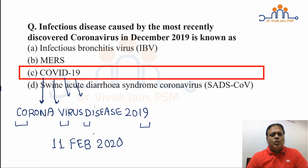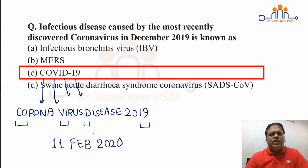This name COVID-19 was given by the World Health Organization on 11th of February 2020. Much before that, on 7th January 2020, this organism was first known as novel coronavirus and was subsequently renamed as SARS-CoV-2.